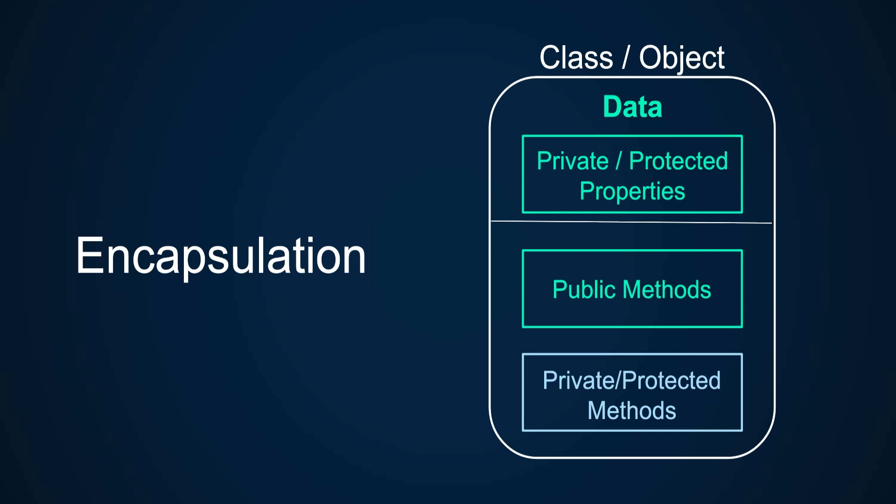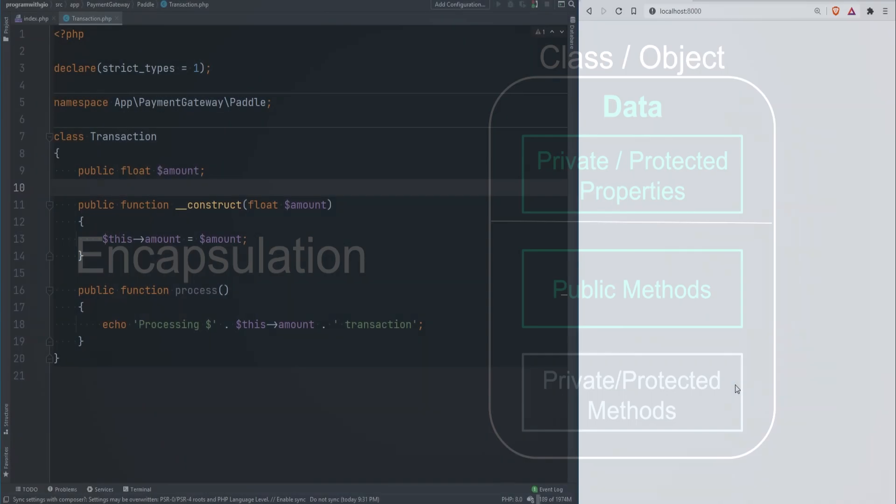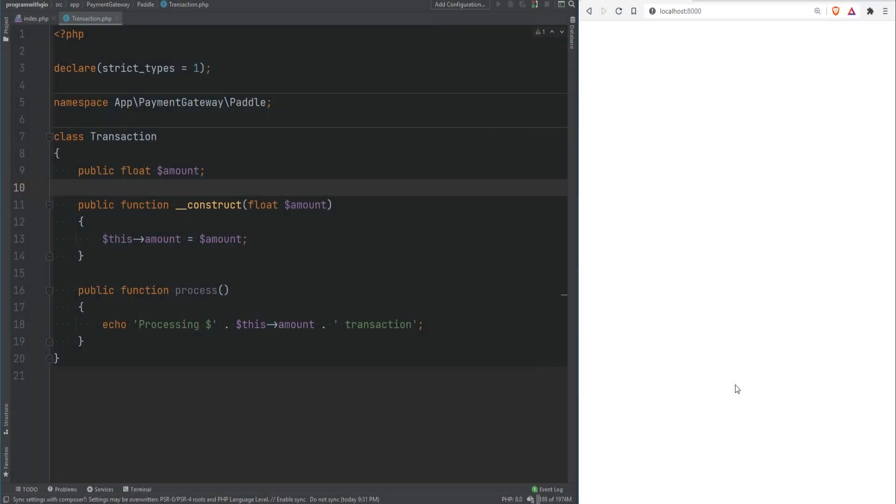So what is encapsulation? Encapsulation simply bundles the data and methods that operate on that data within one unit, like a class for example. It hides the internal representation or the state of the object, which protects the integrity of that object. Encapsulation ensures that your object manages its own state and nothing can change that unless it's explicitly allowed.